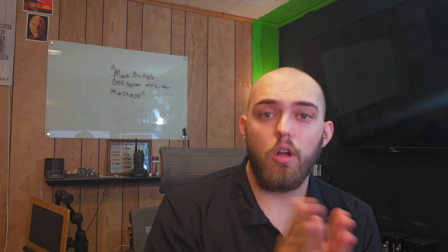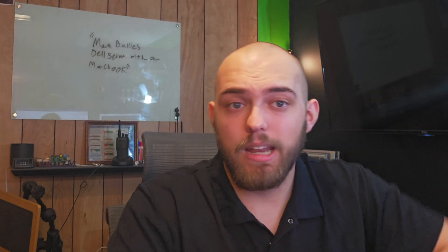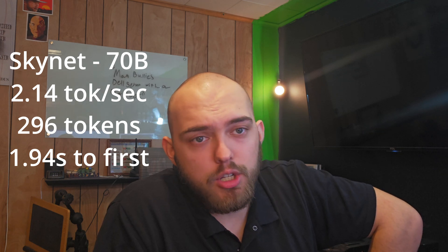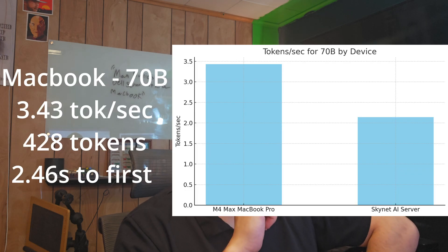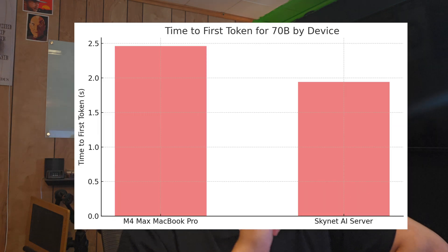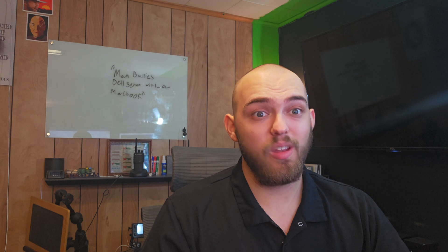The second prompt I gave all three models on both machines was: build me a simple Python app that counts up to 30 seconds and down to zero so I can relax. Starting with the 70 billion parameter model on the Skynet server, 2.14 tokens a second average, 296 tokens generated, and 1.94 seconds to the first token. On the MacBook, 3.43 tokens a second, 428 tokens generated, and 2.46 seconds to first token. That is abysmally slow, but it's impressive — even in a weight class this laptop has no business fighting in, it ran the model and I still had a Chrome tab open.